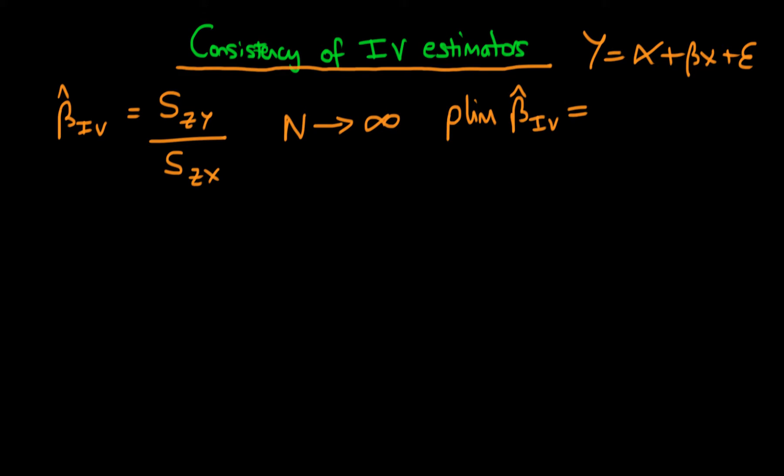we can replace these sample analogues here by their population quantities. So the numerator now becomes the covariance of Z with Y and the denominator becomes the covariance of Z with X. In both of these expressions implicit is the fact that we're talking about population quantities.